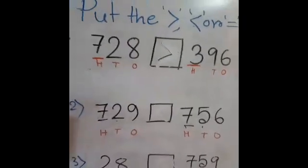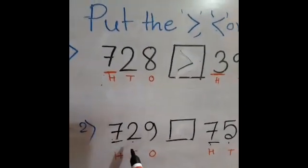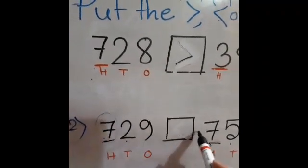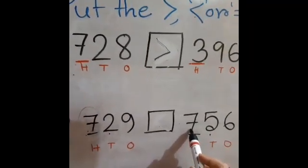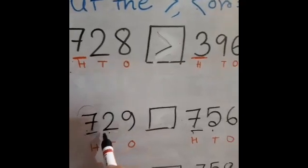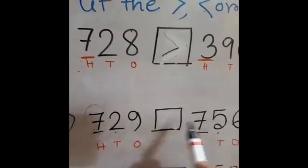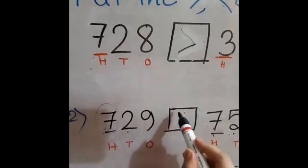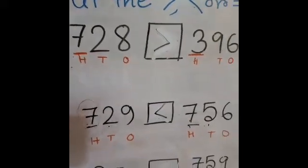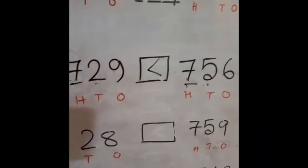Our next example is 729 and 756. Again, we check from the hundreds place. Here both have 7 in the hundreds place, so we move to the next place value — the tens place. In the tens place, 729 has 2 and 756 has 5. Since 5 is greater than 2, we put less than: 729 is less than 756.